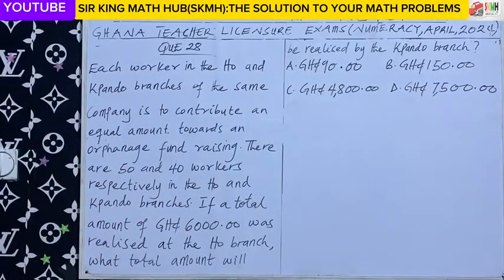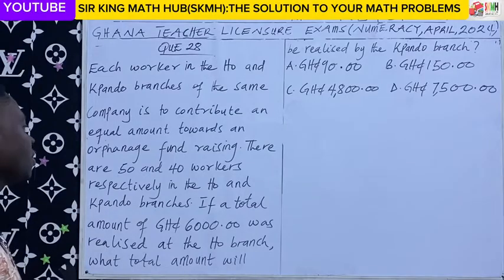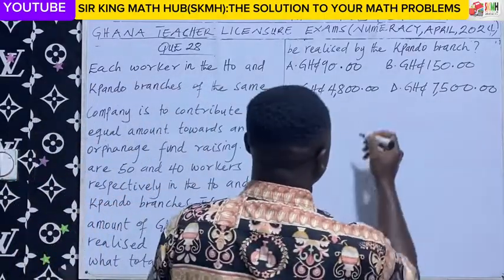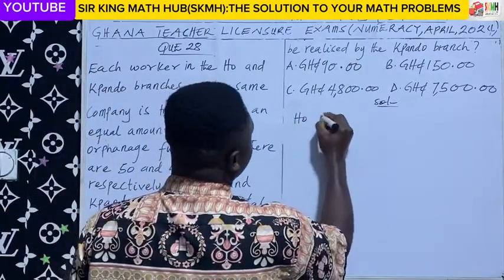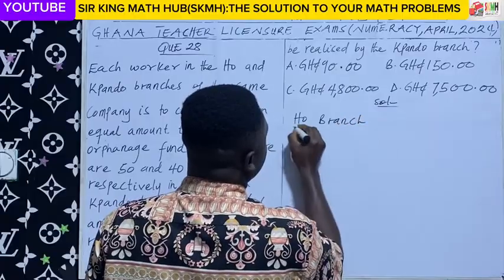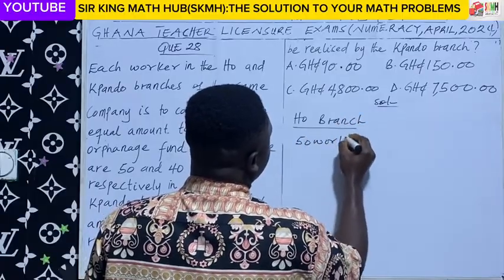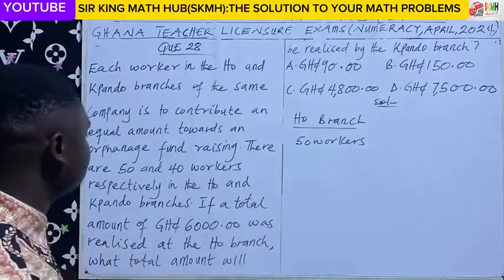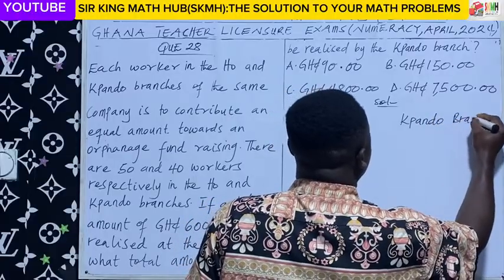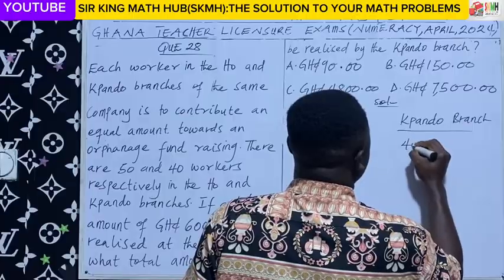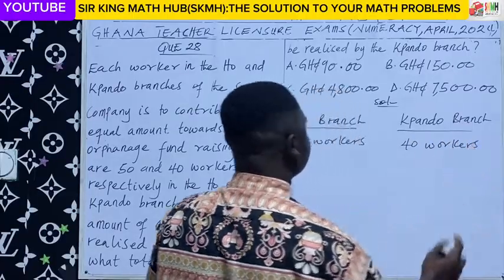Question 28. Each worker in the WHO and Pando branches of the same company is to contribute an equal amount towards an orphanage fundraising. There are 50 and 40 workers respectively in the WHO and Pando branches. So let's represent the number of workers in each branch. For the WHO branch we have 50 workers, and for the Pando branch there are 40 workers.